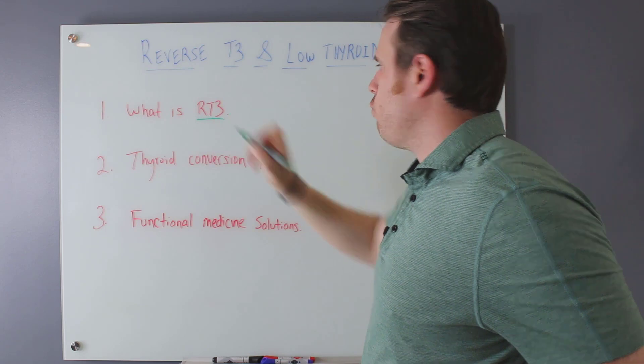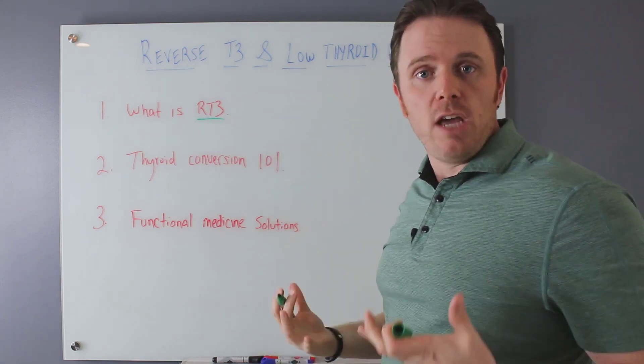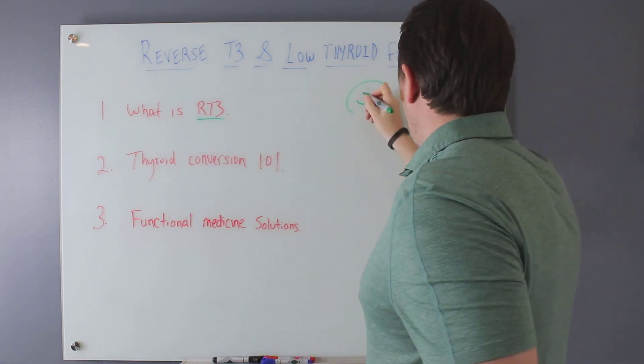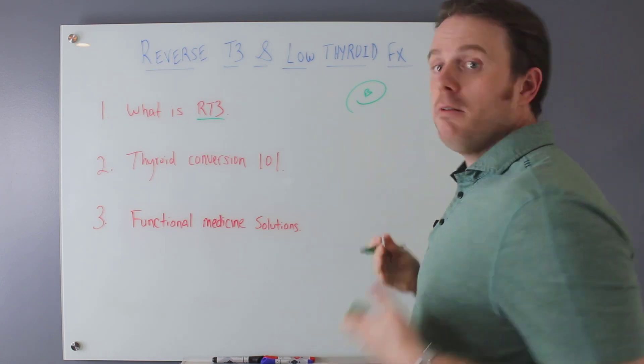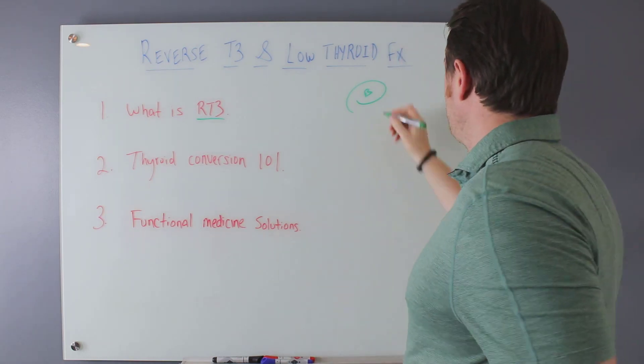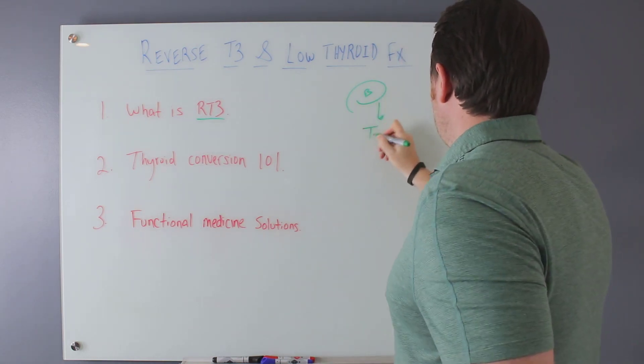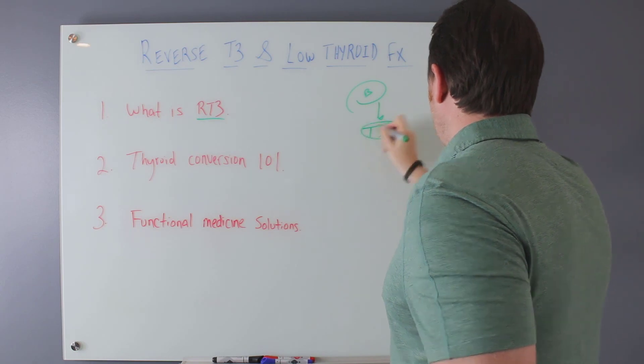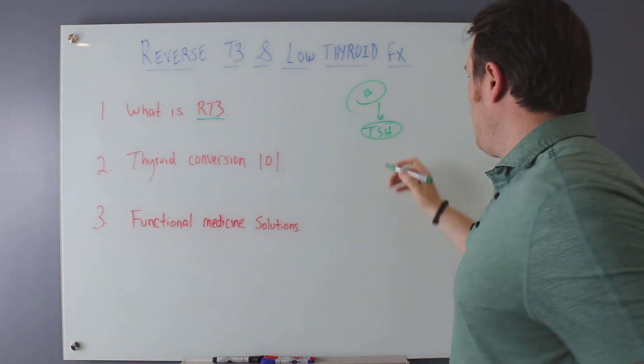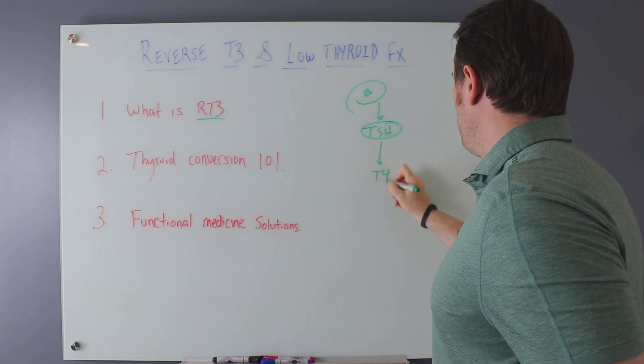Reverse T3 or RT3 for short. So in general, we kind of have our brain, all right? Our brain then produces TSH, okay? TSH is produced by our pituitary part of the brain, and then TSH converts downstream to T4.